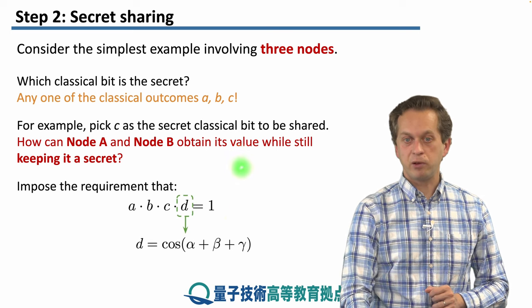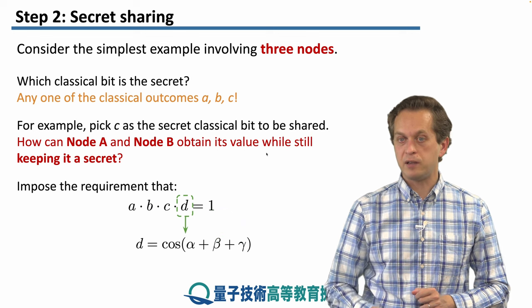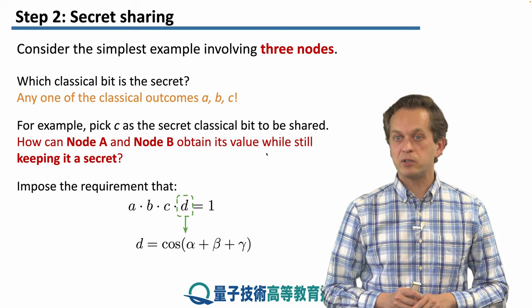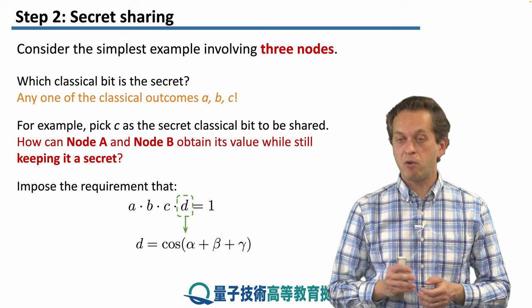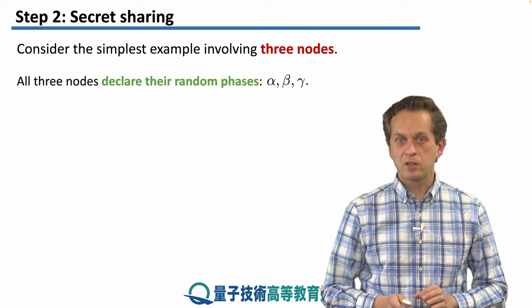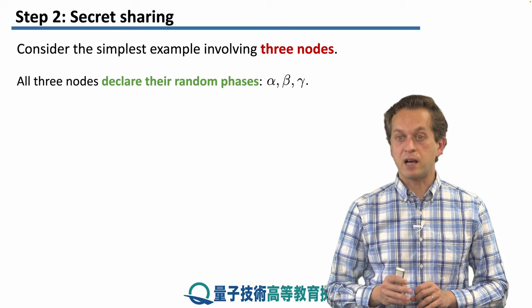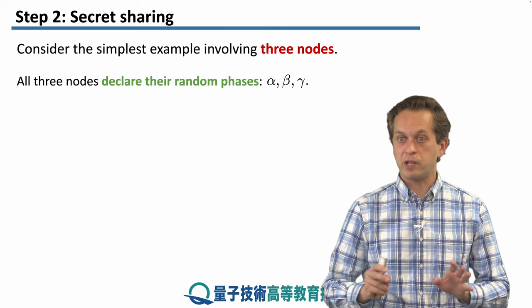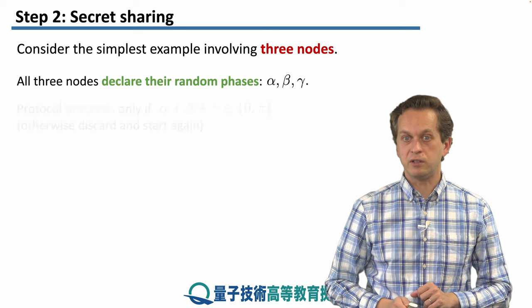This d has the following form. It's the cosine of the sum of α, β, and γ. α, β, and γ, just to remind you, are the random numbers which are either 0 or π/2. So now all three nodes declare their random phases α, β, and γ to the network. So everybody, any eavesdropper, knows what the nodes initially generated.